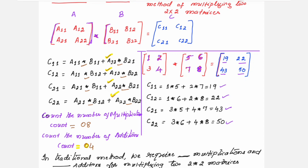We are checking here because we are interested in the time complexity of the problem. In this traditional method, we found that in order to compute the product of two 2×2 matrices, we need 8 multiplications and 4 additions. So, in conclusion, the traditional method requires 8 multiplications and 4 additions for multiplying 2×2 matrices.